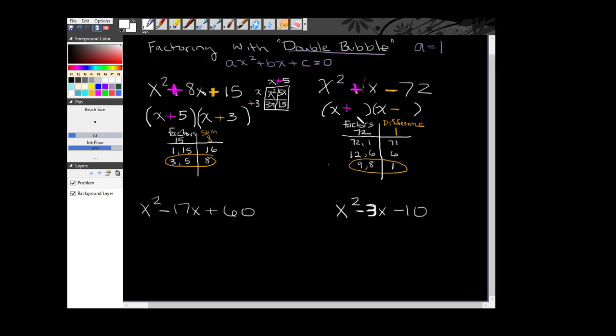Now remember, when we dropped this plus sign down, that is the sign of the bigger factor. So I want to put the 9 here and the 8 here. If I don't put the bigger factor there, it'll cause this number, this b value, to not be correct.